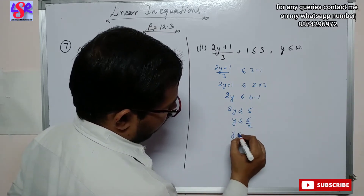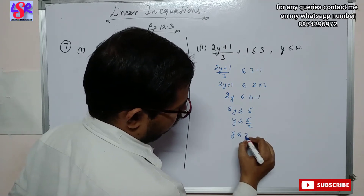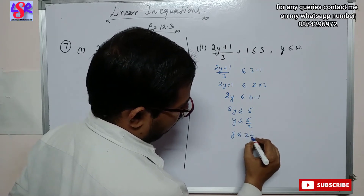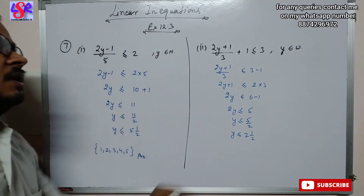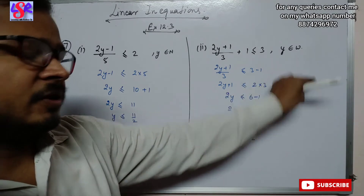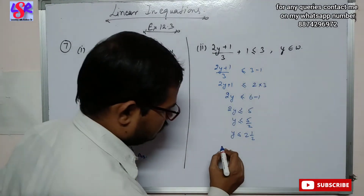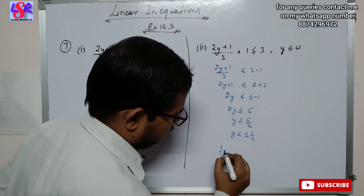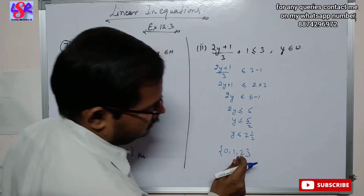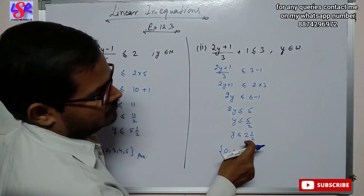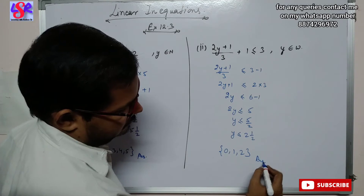This can be written as y is less than or equal to 2 and 1/2. It has been given that y is the element of whole number, and whole number begins from 0. So the answer can be written as 0, 1 and 2. Here 2 is included because 2 and 1/2 is greater than 2.